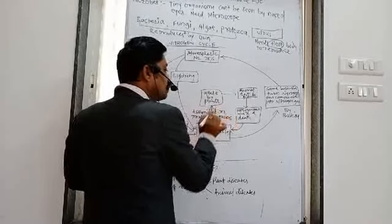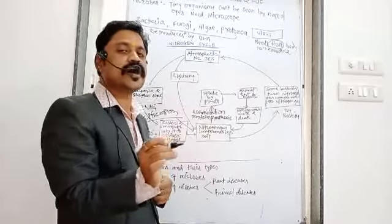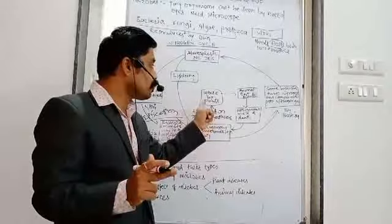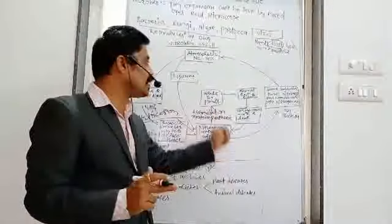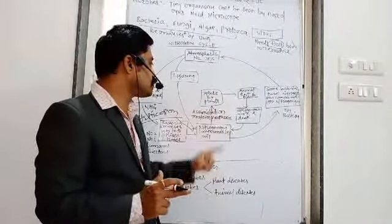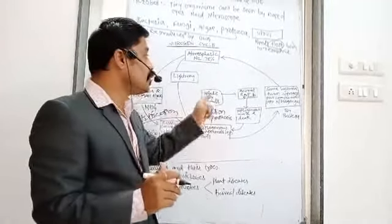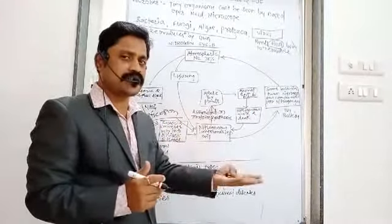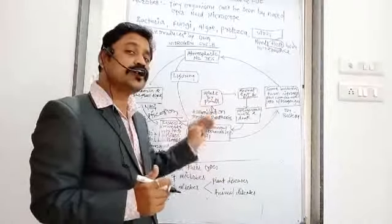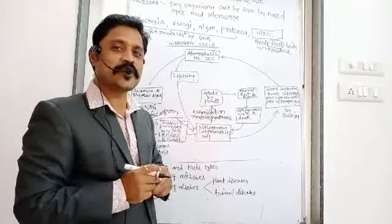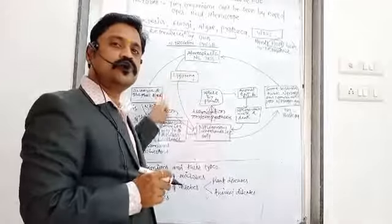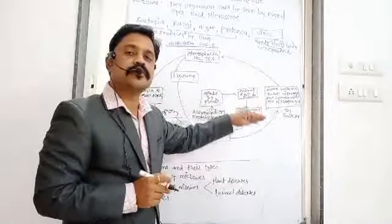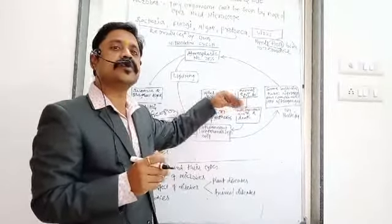Without nitrogen, plants cannot produce proteins, and if proteins are not available, the proper development of plants will not take place. Nitrogen is very important — from the soil it is absorbed by the plant, and by the assimilation process it is used to prepare proteins. This protein is eaten by animals: herbivorous animals eat plant parts, and in doing so, the transfer of nitrogen takes place from atmospheric nitrogen to nitrogenous compounds to plants and then to animals. When carnivorous animals eat other animals, they also produce nitrogenous waste.